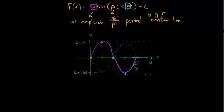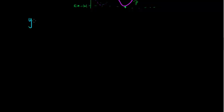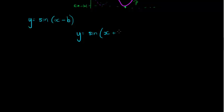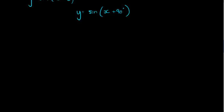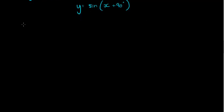Now what does b do to the graph? We'll look at the basic format with only a b: sine of (x − b), without a p multiplying. Let's use the example sine of (x + 90°). To understand this, let me draw a little table where x is the input, and theta — x plus 90 degrees — is my input angle.